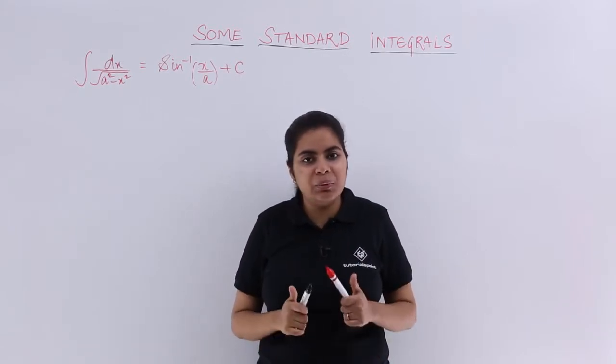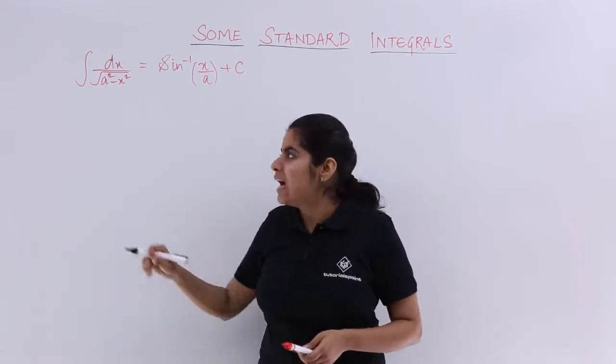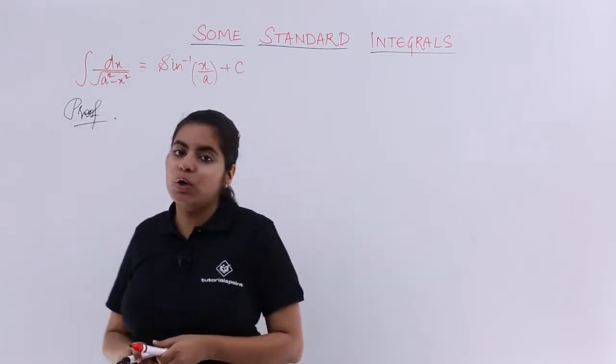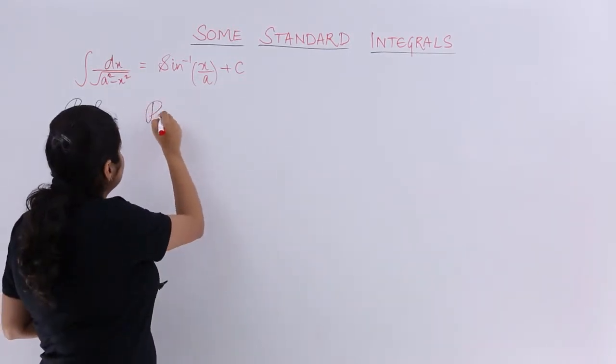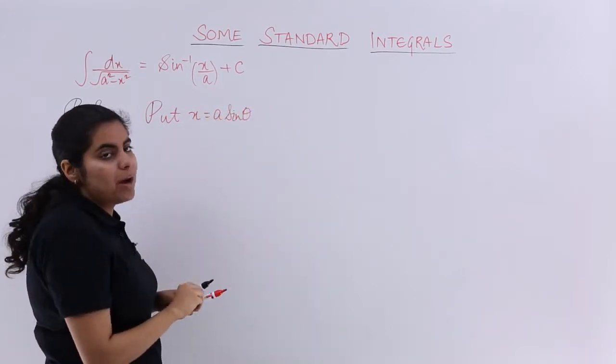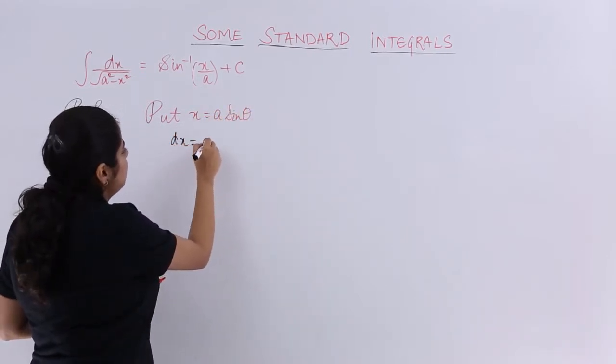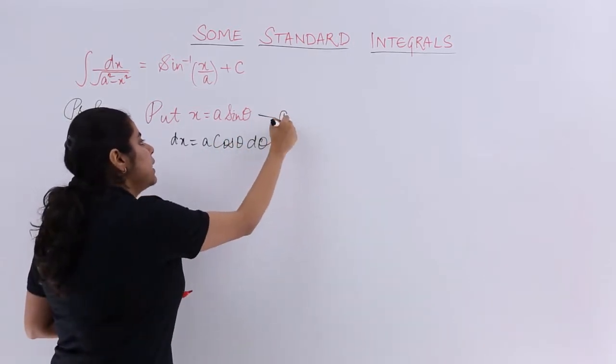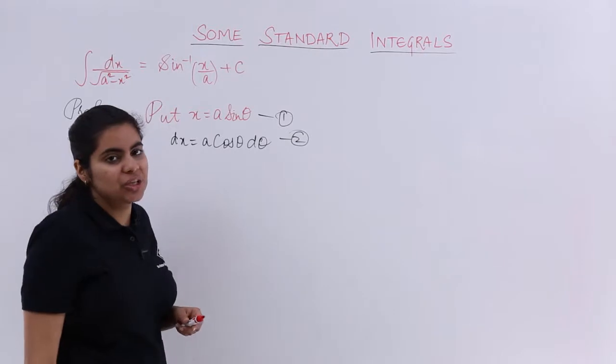I will substitute x equals a sine theta. Let's see how to do it. I write proof, and I know what to do now. I have to put x equals a sine theta. My dx equals a cos theta d theta, right? If this is my equation number one, this can be made as equation number two.